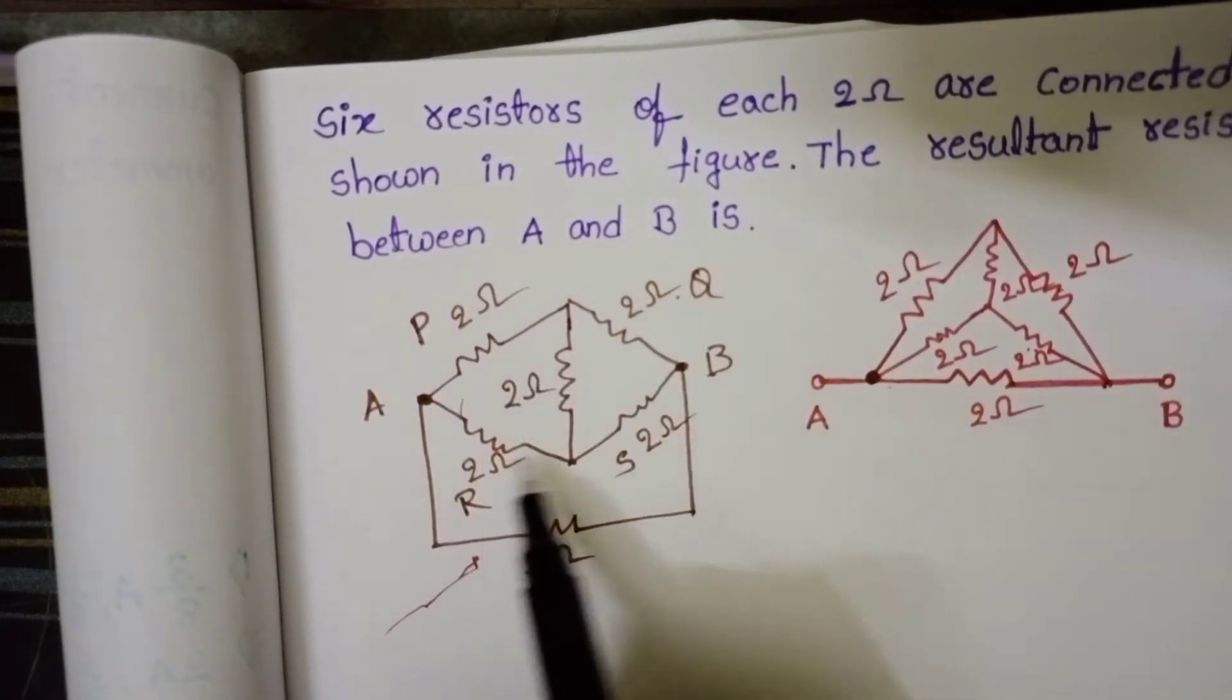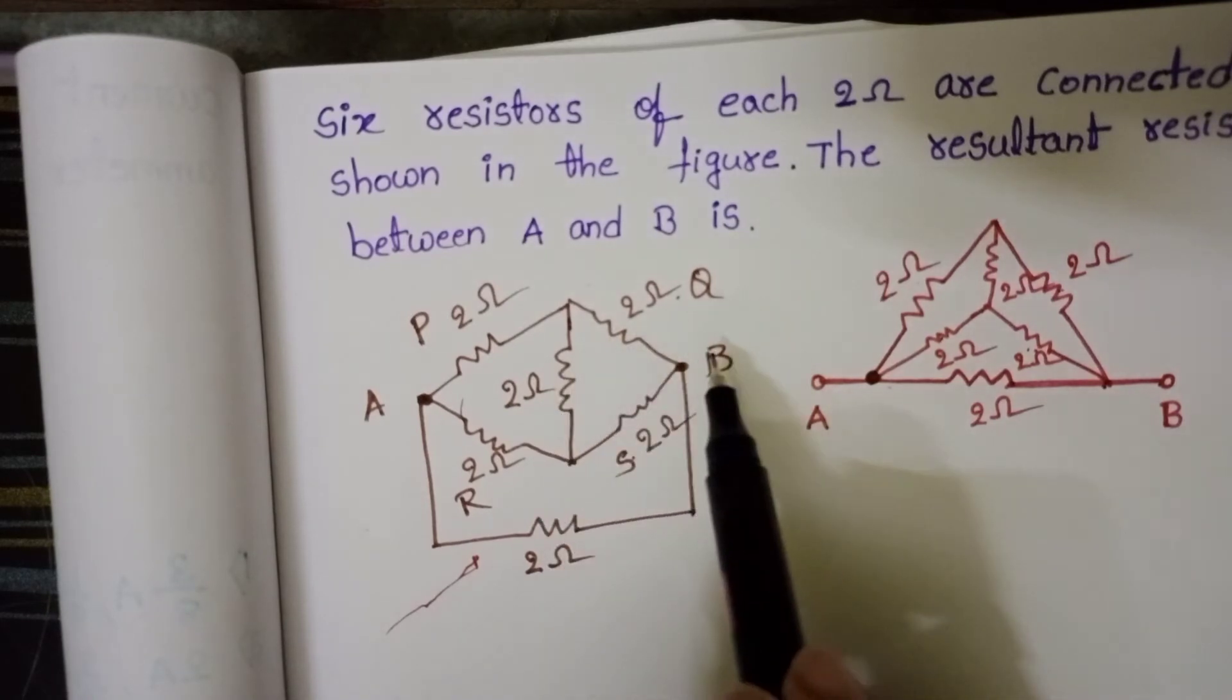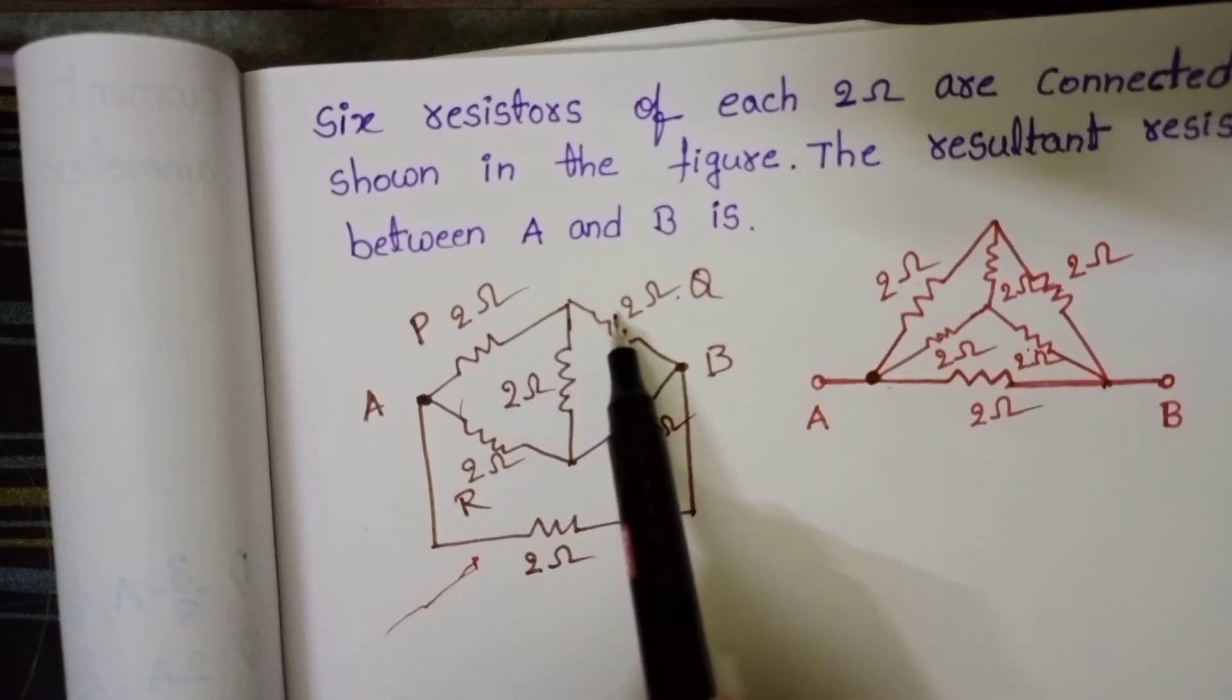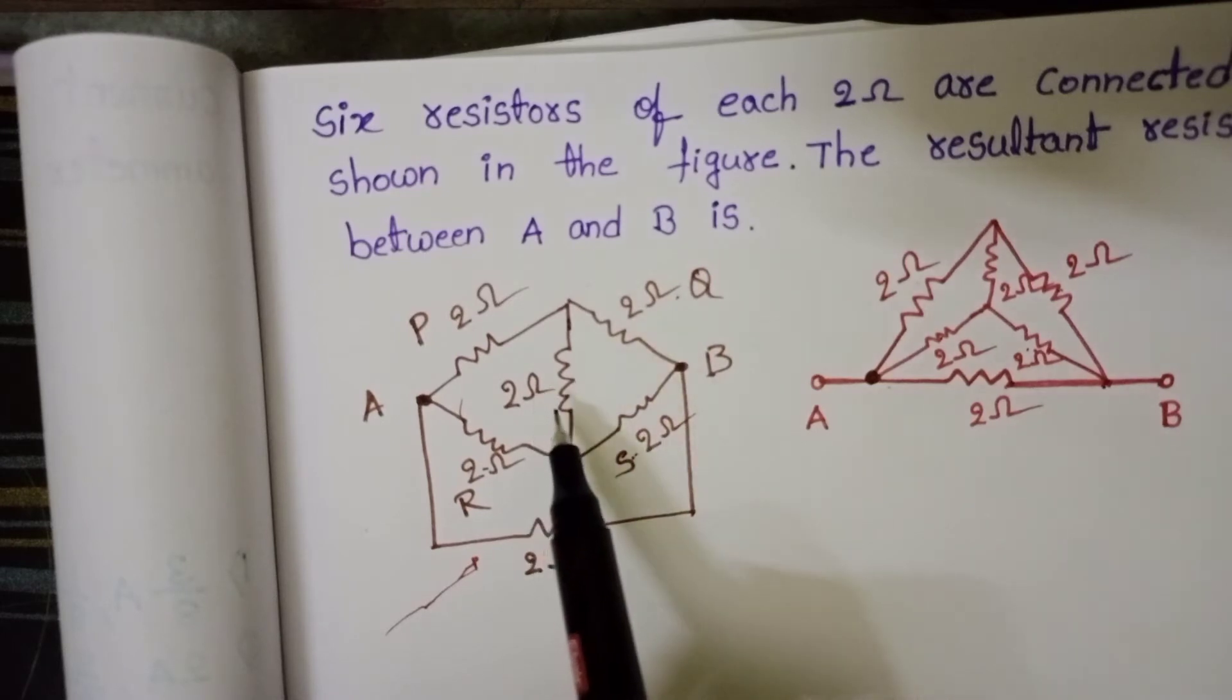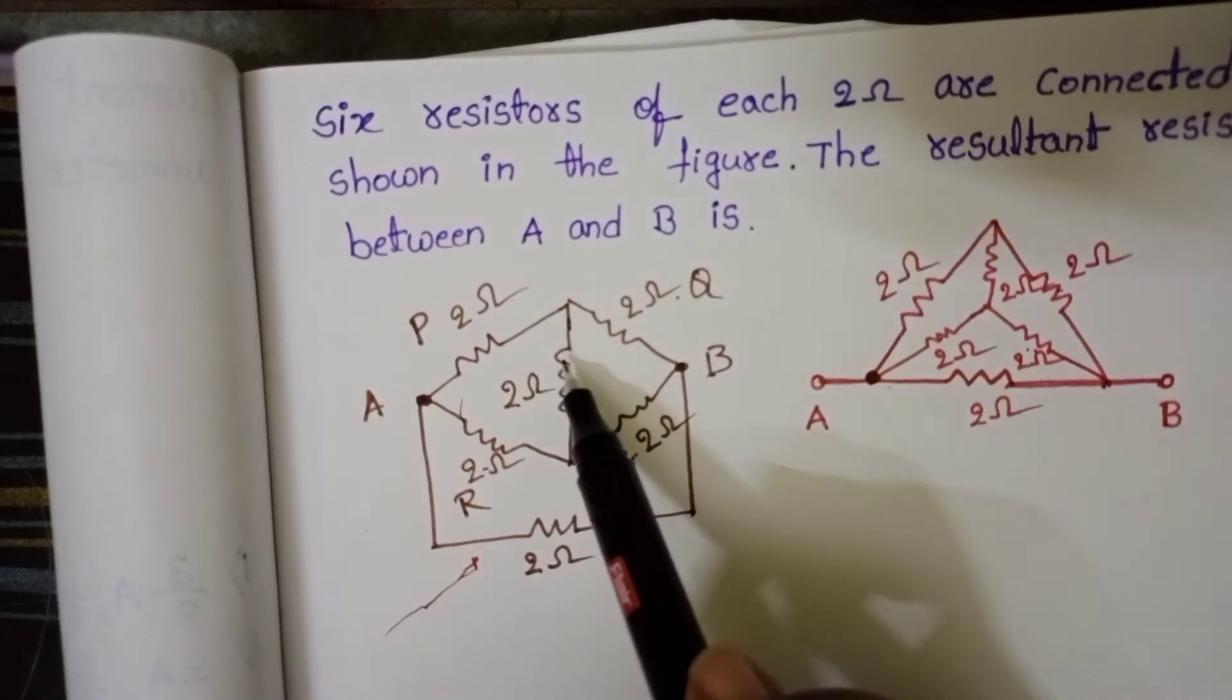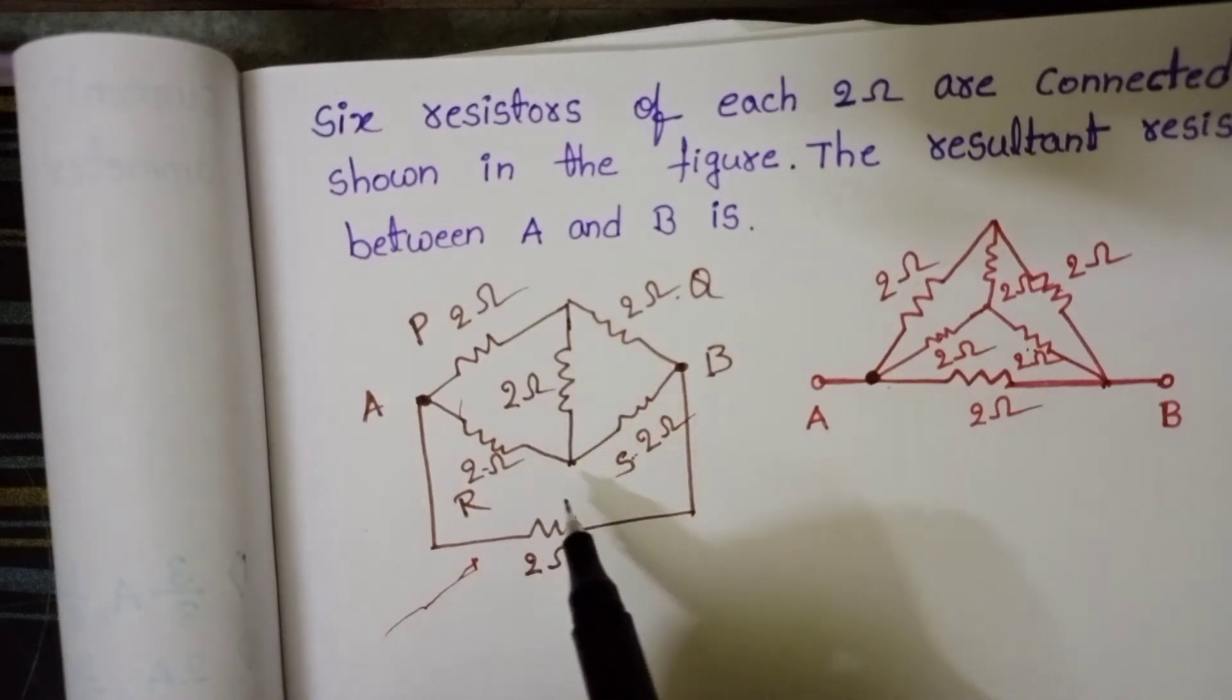P by Q equals R by S, then the bridge is a balanced Wheatstone bridge. Here each resistor resistance is 2 ohm. 2 by 2 equals 1, and here also 2 by 2 equals 1. When the bridge is balanced, there is no flow of electric current through this resistor. So this resistor is inactive in this circuit.